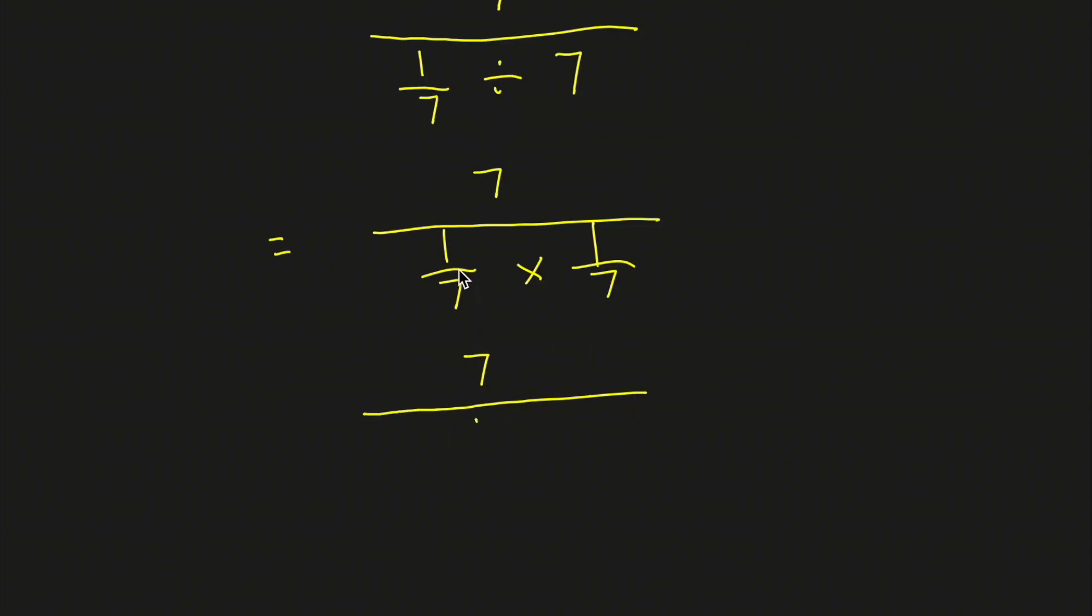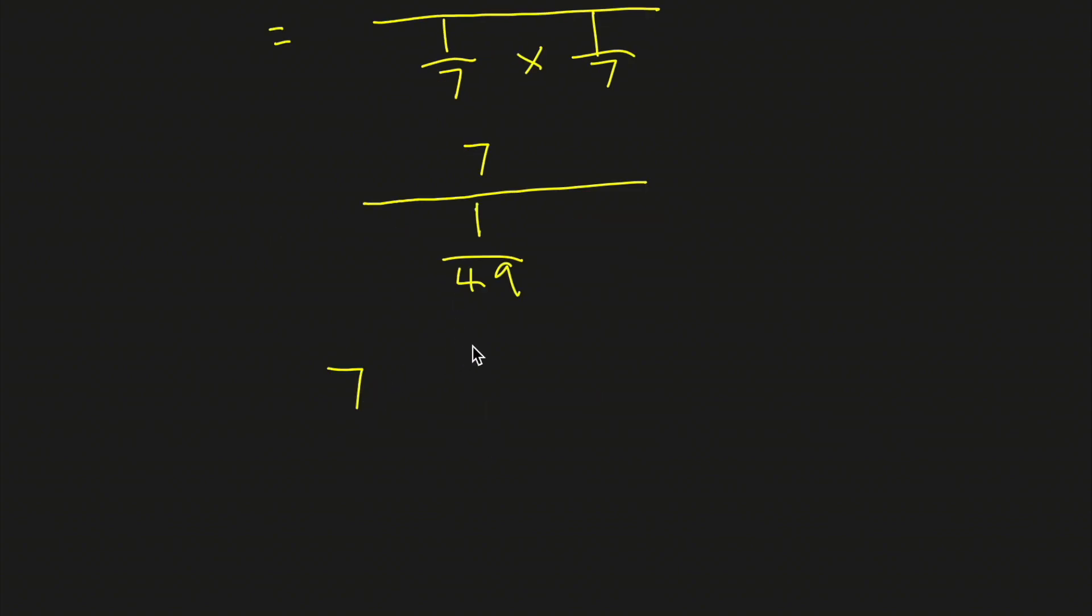Then 1/7th times 1/7th is 1 over 49. And 7 divided by 1 over 49 is 7 times the reciprocal of 1 over 49, which is 49.